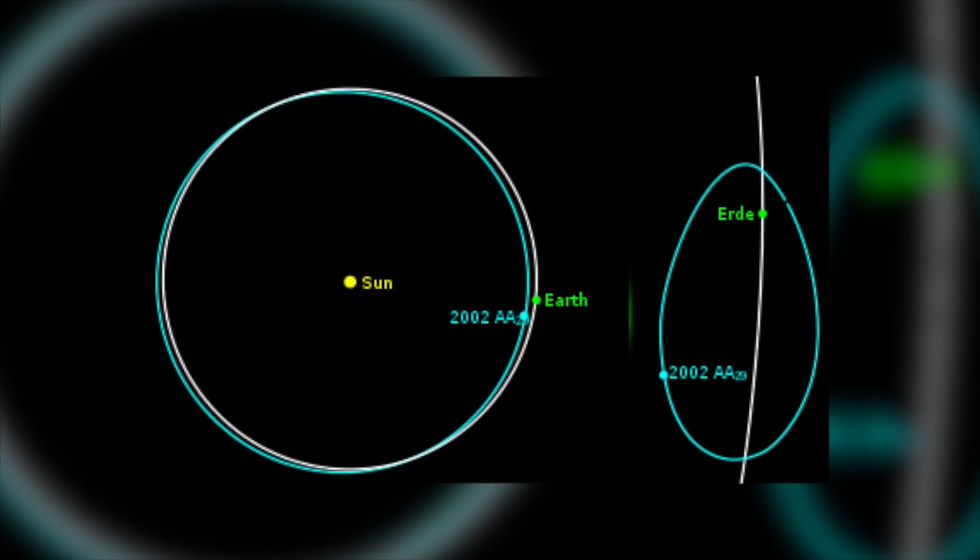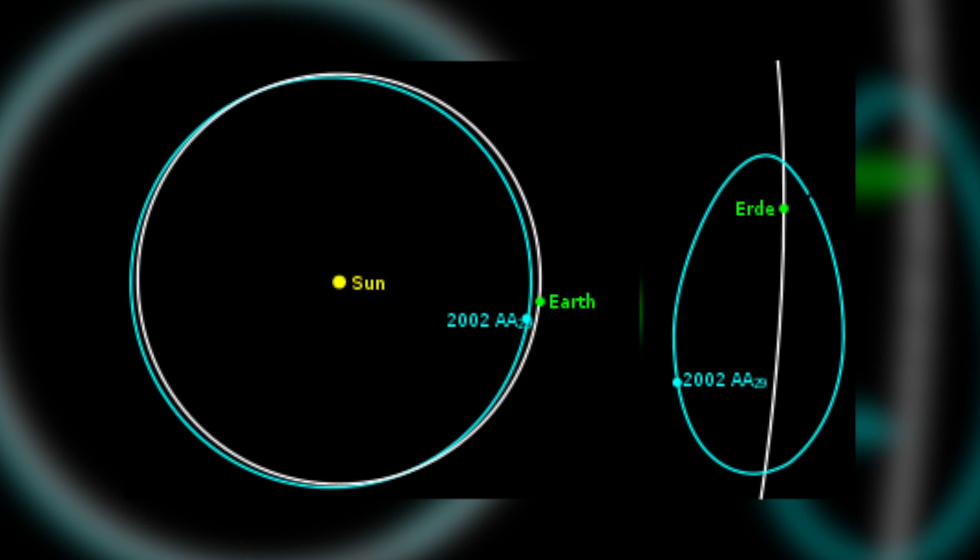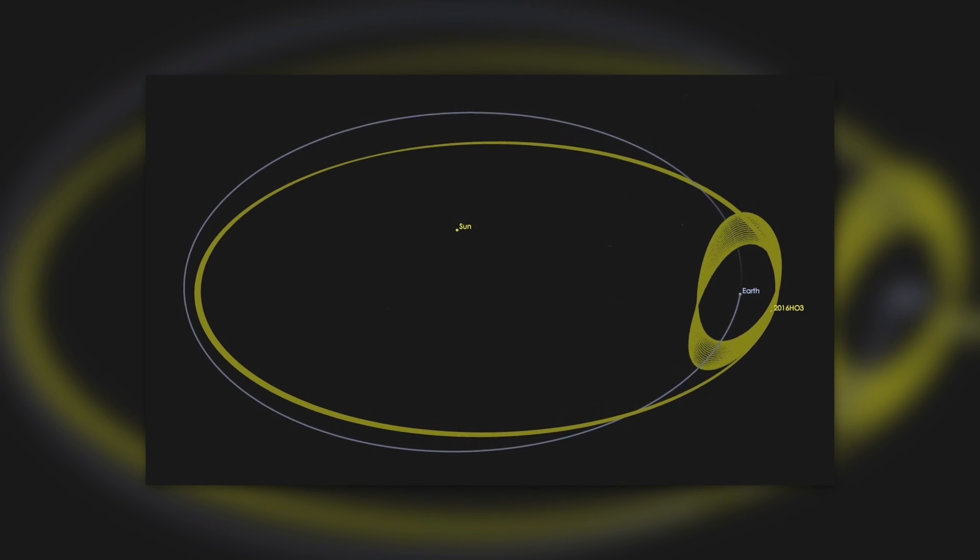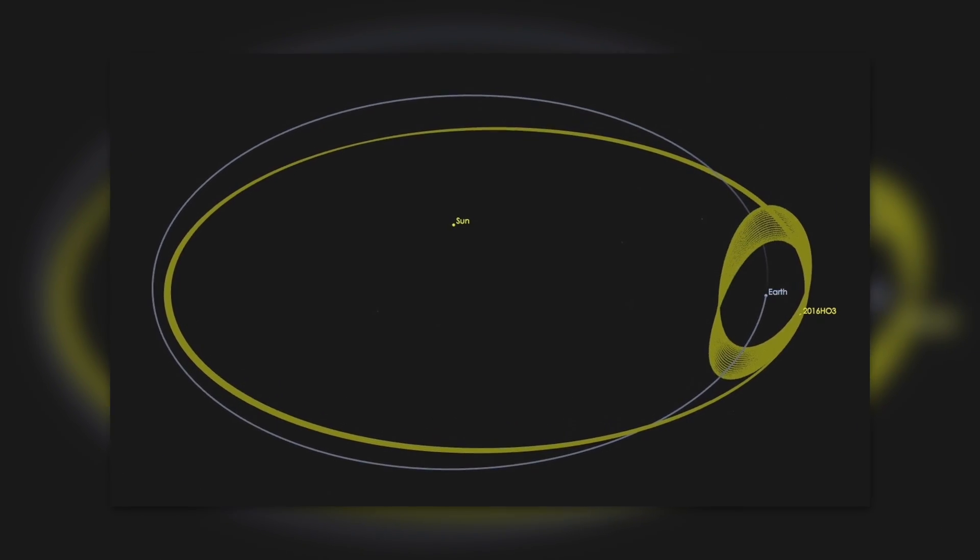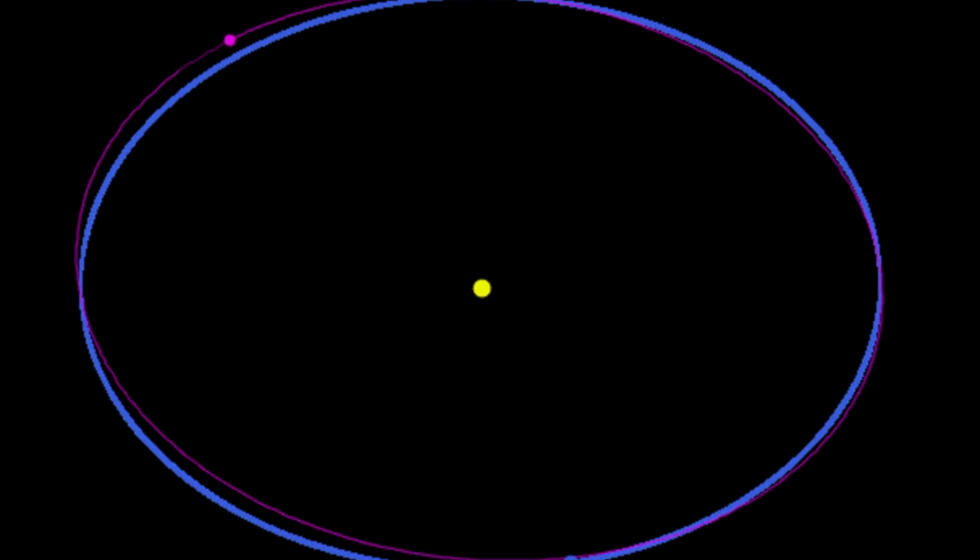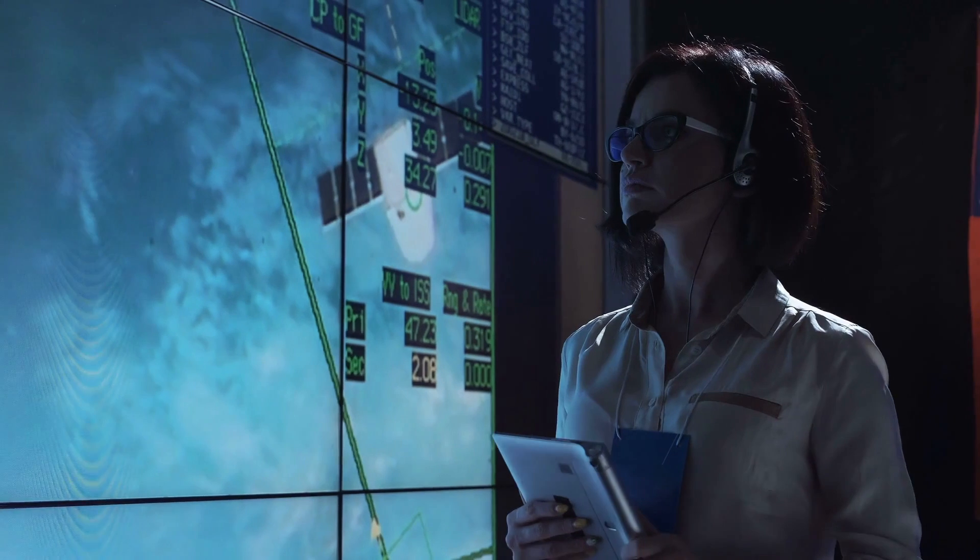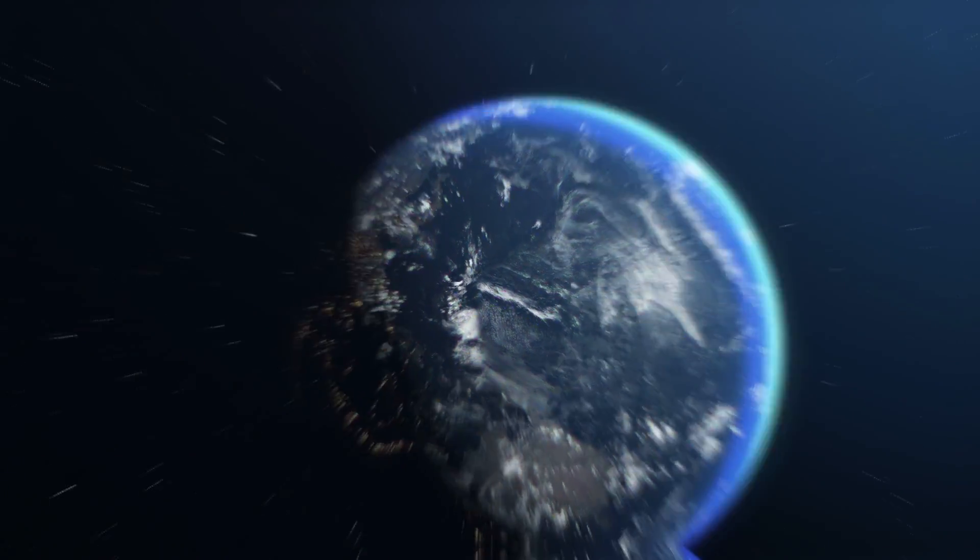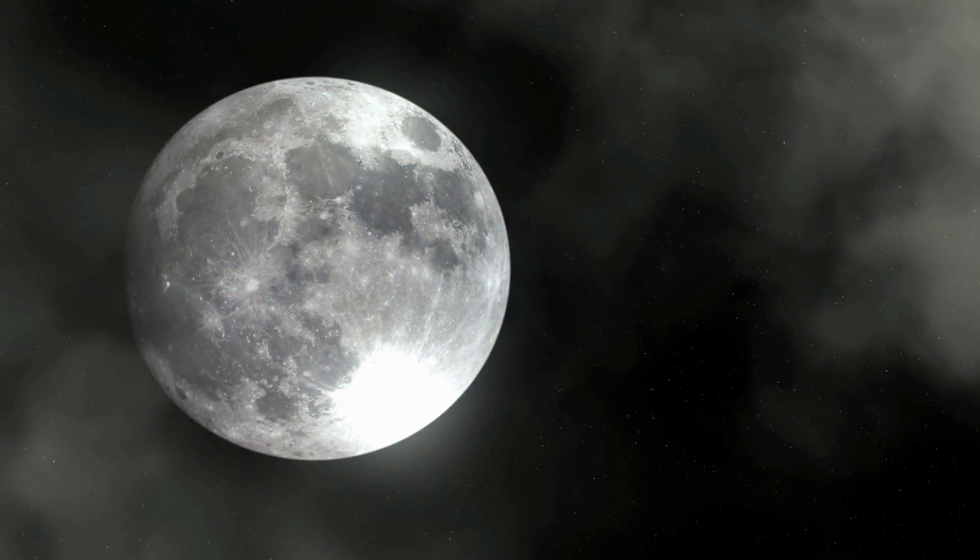The center of attention is the asteroid 2003 YN107. This is an inconspicuous celestial object. It's mentioned in particular because of its orbit around the Sun, which is very close to the Earth. Scientists assume that it's part of the Earth, or the current Moon, which was blown off during a collision with a meteorite.